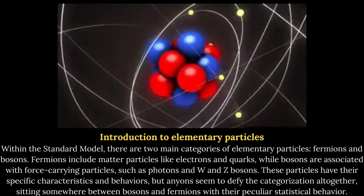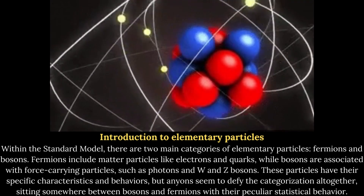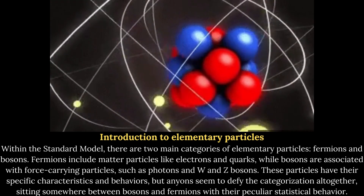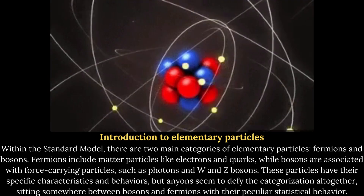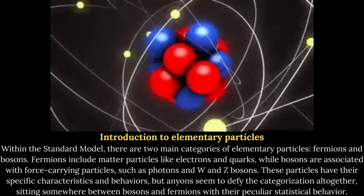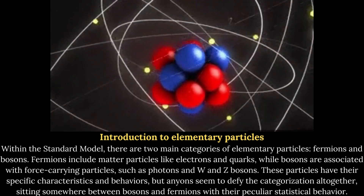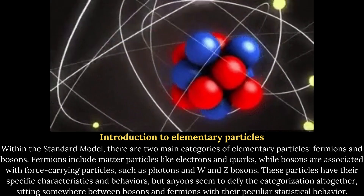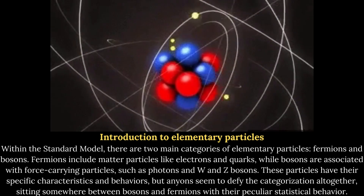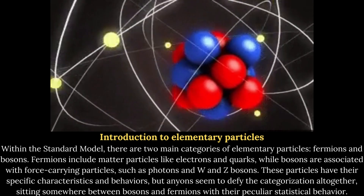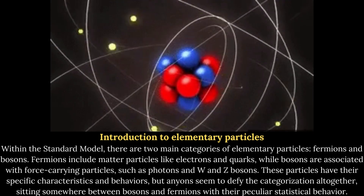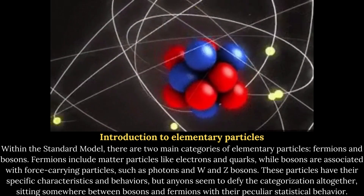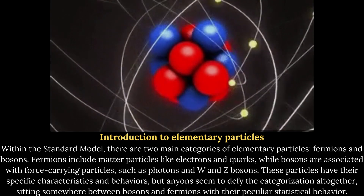Introduction to elementary particles. Within the standard model, there are two main categories of elementary particles: fermions and bosons. Fermions include matter particles like electrons and quarks, while bosons are associated with force-carrying particles such as photons and W and Z bosons. These particles have their specific characteristics and behaviors, but Anyons seem to defy categorization altogether, sitting somewhere between bosons and fermions with their peculiar statistical behavior.